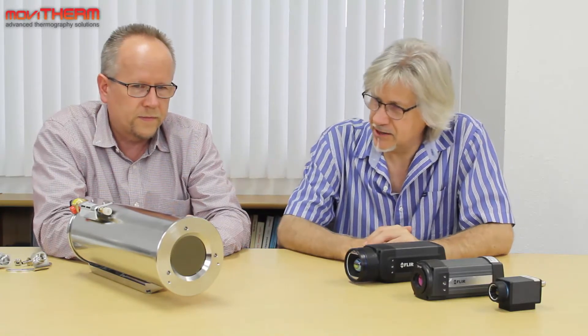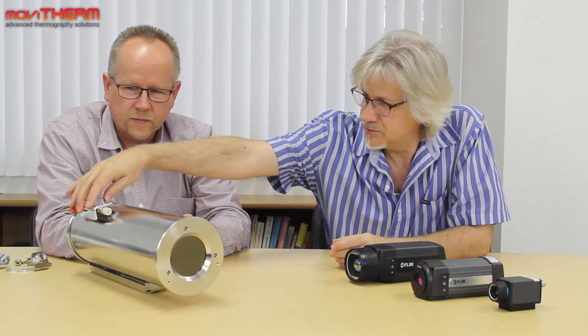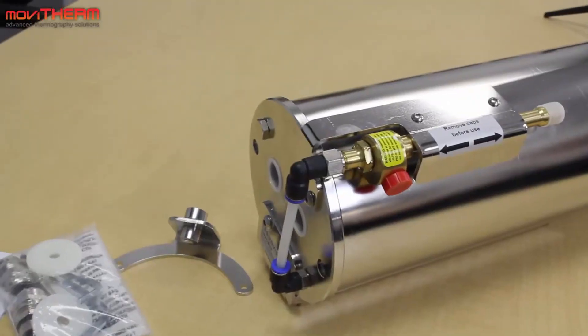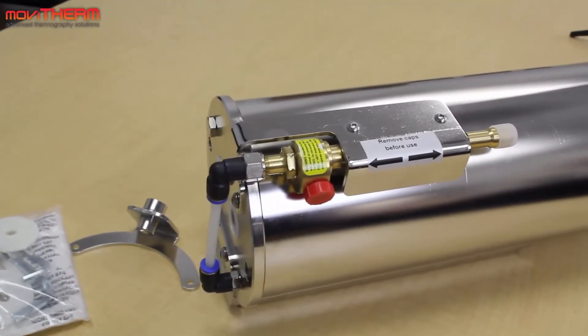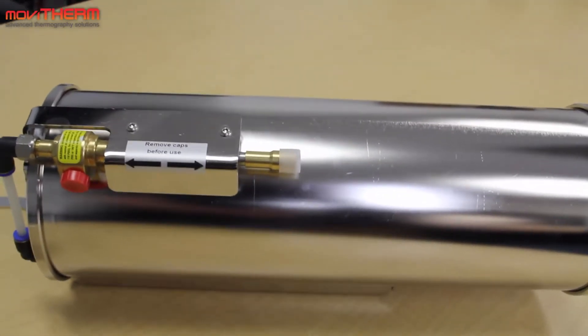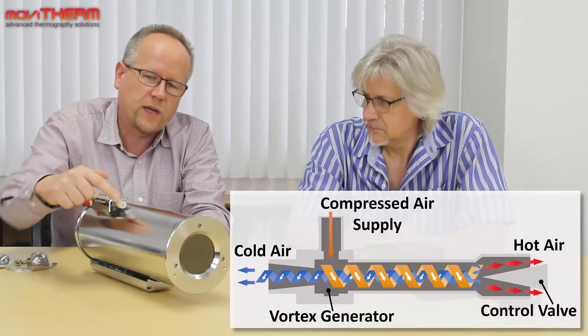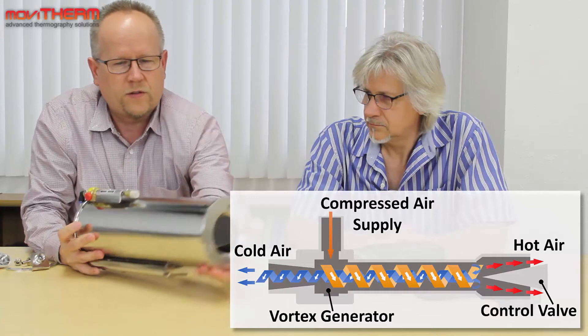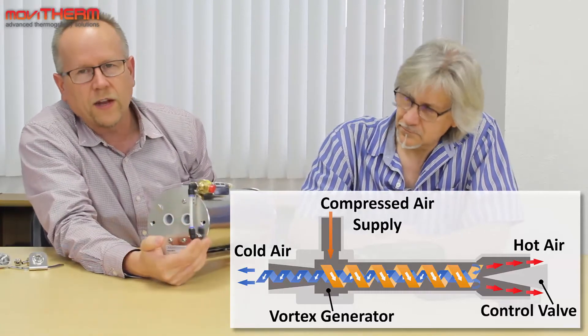This enclosure comes with a special cooling option, this is actually a vortex tube and that allows us to connect compressed air here and it actually separates the compressed air into a hot air stream that comes out the top up front here and a cold air stream that goes into the back of the enclosure here.